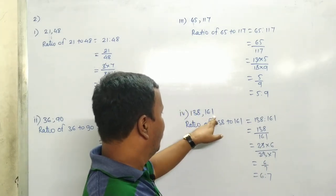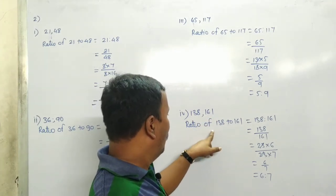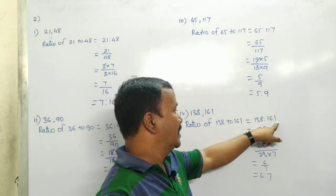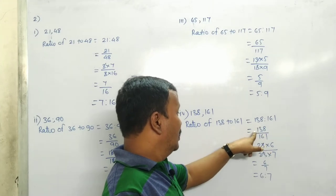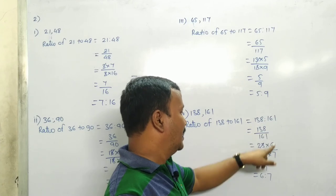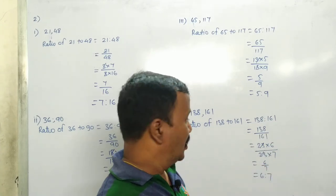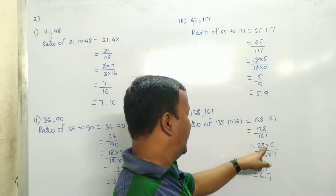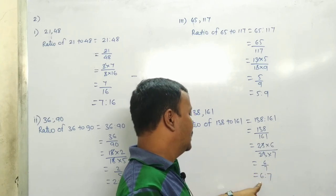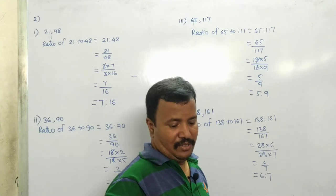138 and 161. Ratio of 138 to 161 equals 138 divided by 161. 23 times 6 is 138, 23 times 7 is 161. 23, 23 cancel. Answer is 6 upon 7, that is 6 ratio 7.